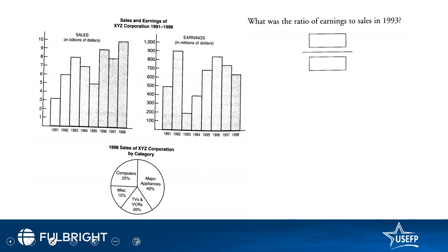Next question is a data analysis question with numeric entry. Always read the legend first: sales and earnings of XYZ corporation from 1991 to 1998. Then read the axes — the X axis shows 1991 to 1998, the Y axis shows sales on one side and earnings on the other. Then read the additional note: 1990 sales of XYZ corporation — 25% was computers, 40% was major appliances, and so on.